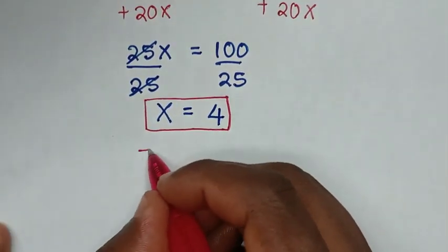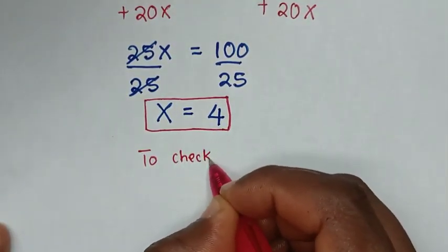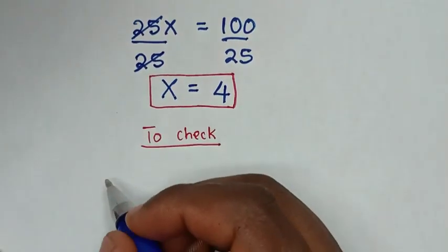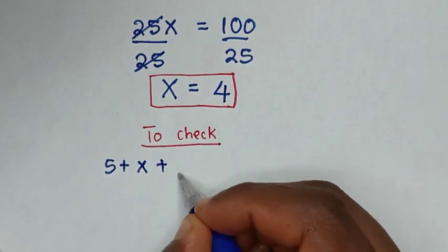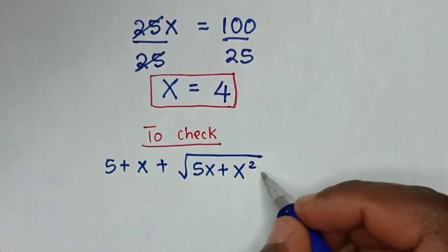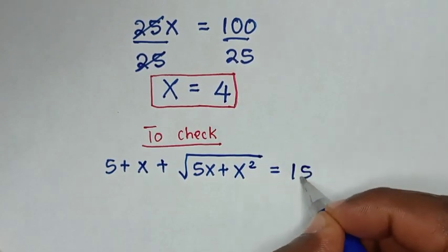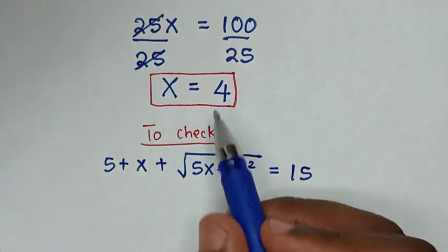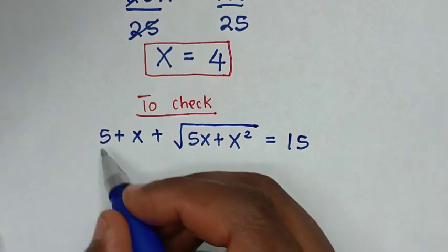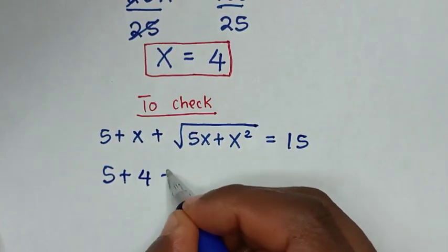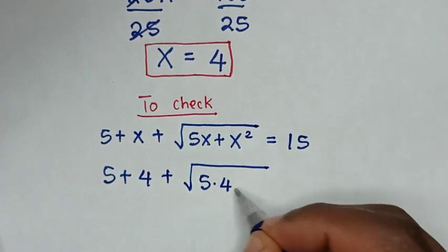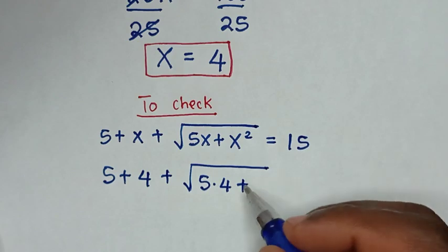Now to check: from our problem, which is 5 plus x plus square root of 5x plus x squared is equal to 15, we substitute the value of x which is 4 into these positions of x. Our equation becomes 5 plus 4 plus square root of 5 times 4 plus 4 squared,